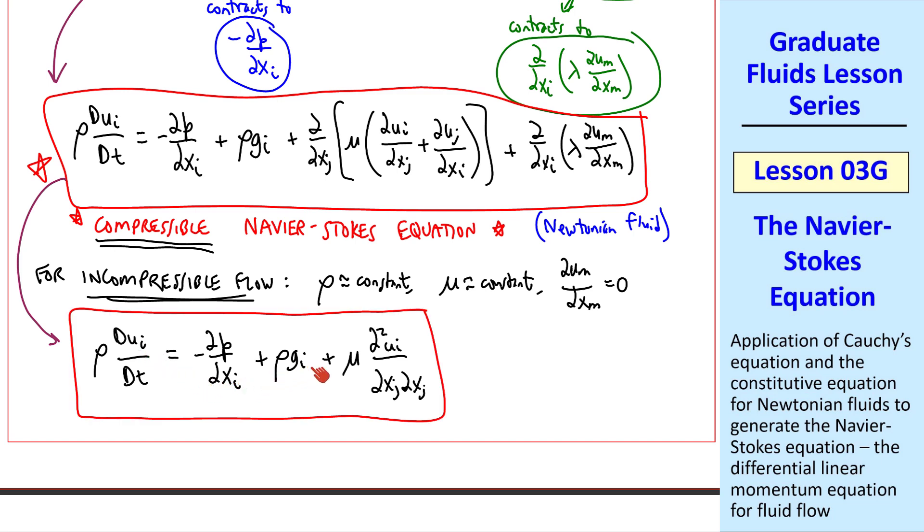Notice the free index i in each term, so that this is a vector equation as it has to be. This is the incompressible Navier-Stokes equation. This will be our workhorse equation throughout this course, although we'll occasionally return to the compressible form. Most of the stuff we do from now on is incompressible.